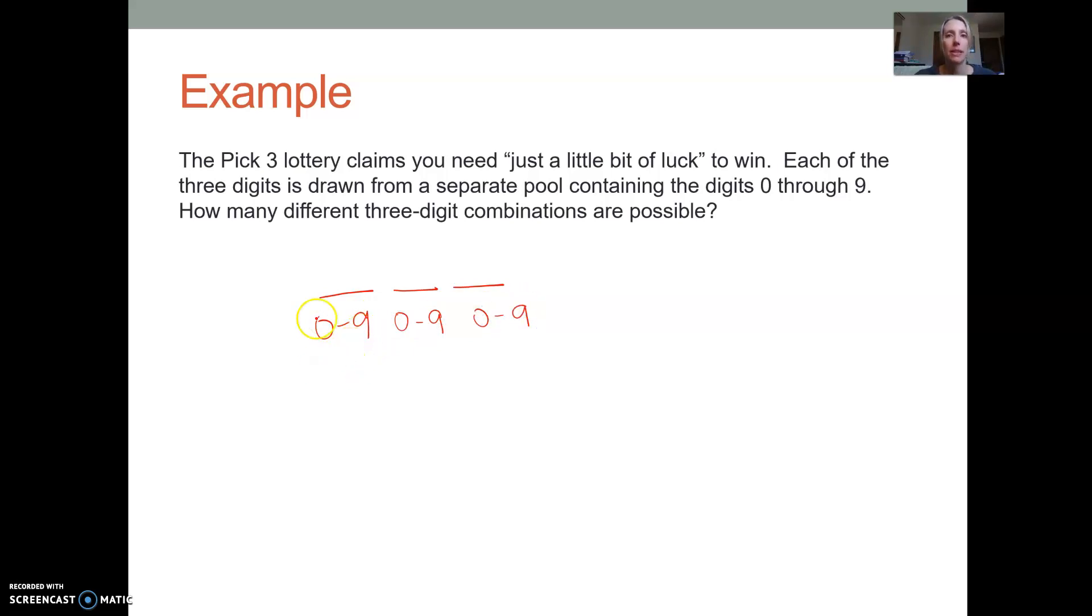So this one is zero through nine, this one is zero through nine, and this one is zero through nine. Well, zero through nine, that's 10 total. So there's 10 options for the first number, and there's 10 options for the second number, and there's 10 options for the third number. And the counting principle tells us we need to multiply these. When we multiply these, we end up with 1000. There are 1000 different combinations to win the pick three.